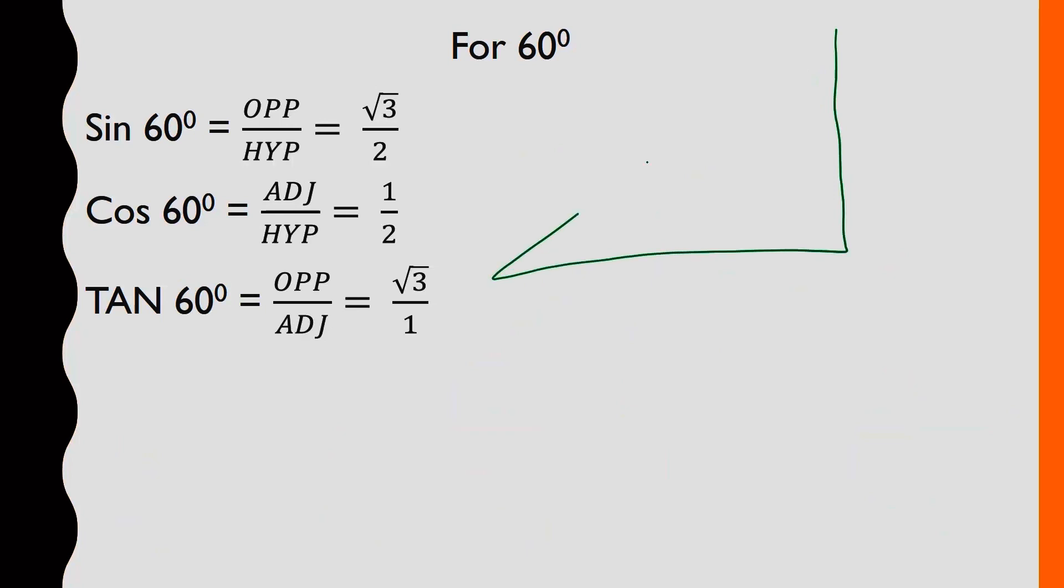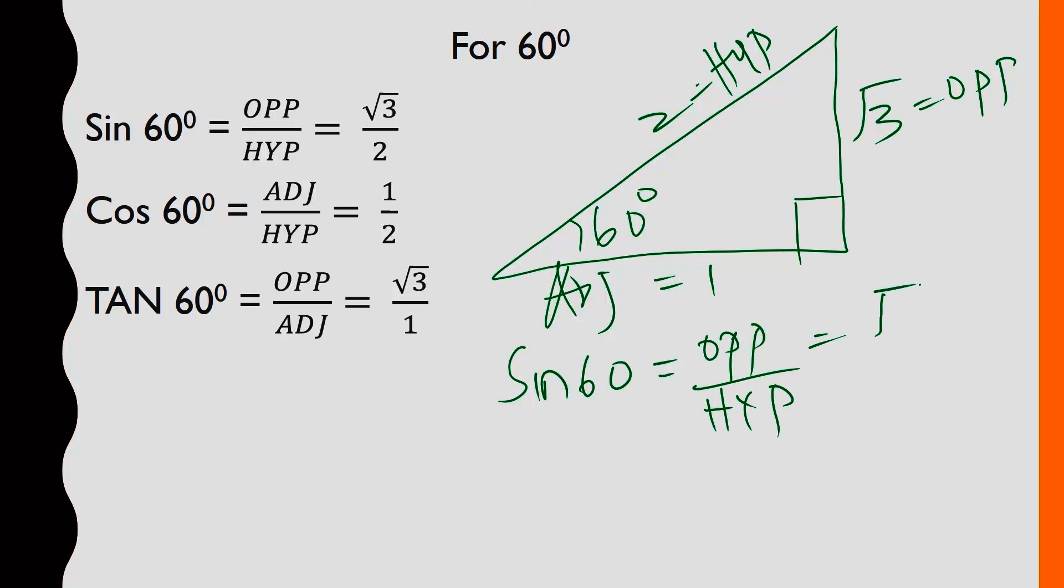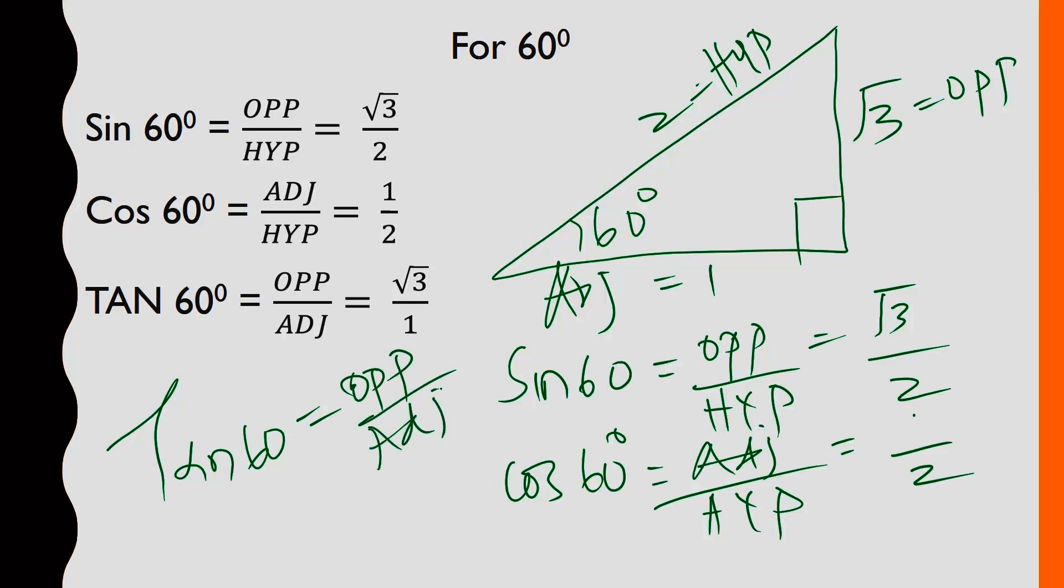Now for 60 degrees, here 60 degrees. This one is 2, here is √3, this is 1. 90 is here, meaning hypotenuse side is here. Then here is opposite, this one is adjacent. So sin 60° is opposite over hypotenuse, which is √3/2. Then cos 60° is adjacent over hypotenuse, which is 1/2. Then tan 60° is opposite over adjacent, which is equal to √3 over 1, tan 60 degrees.